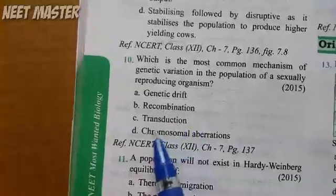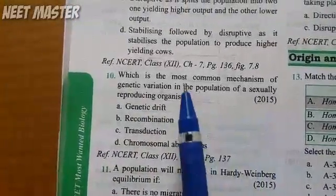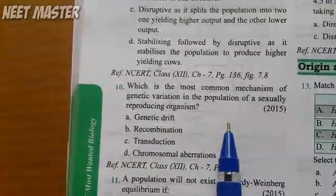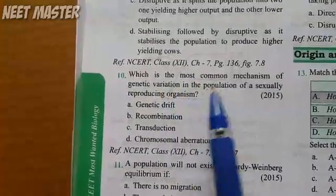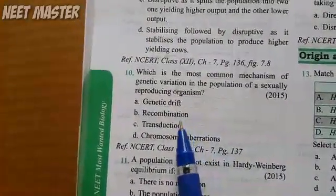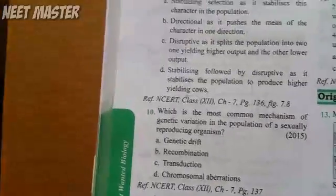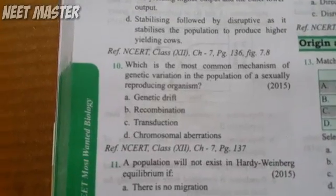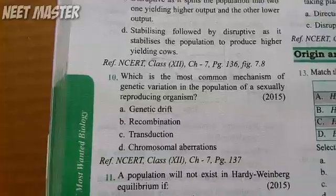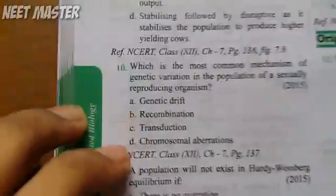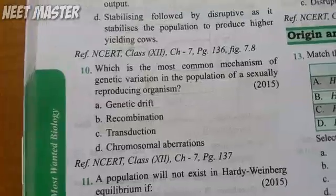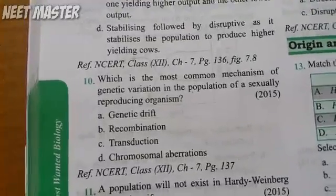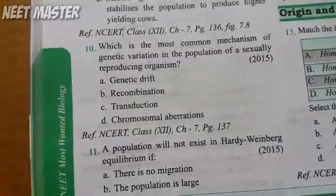B is the right answer. What is the most common mechanism of genetic variation in the population of a sexually reproducing organism? Options: genetic drift, transduction, chromosomal aberration, or recombination. We are sexually reproducing organisms — the answer is recombination.